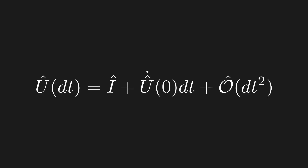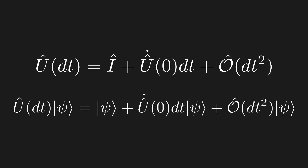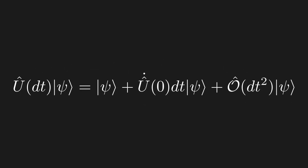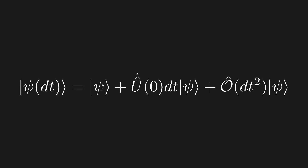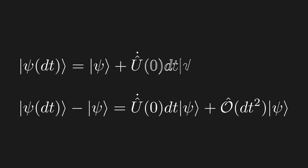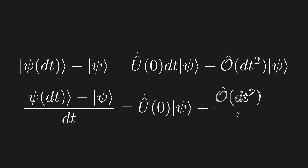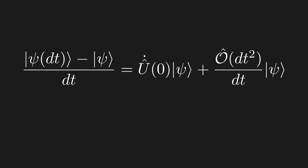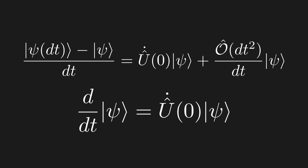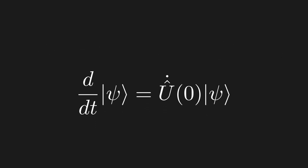Now let's study how this acts on an initial state |ψ⟩. On the left-hand side we get a quantum state time-evolved forward by dt. If we subtract both sides by |ψ⟩, on the left we have the difference in our quantum state after time dt. Dividing both sides by dt and taking the limit as dt goes to zero, we have the limit of the change in our state divided by the change in time — that's the definition of a derivative. All higher order terms vanish as dt → 0, so we are left with the time derivative of our quantum state equal to U-dot acting on |ψ⟩.